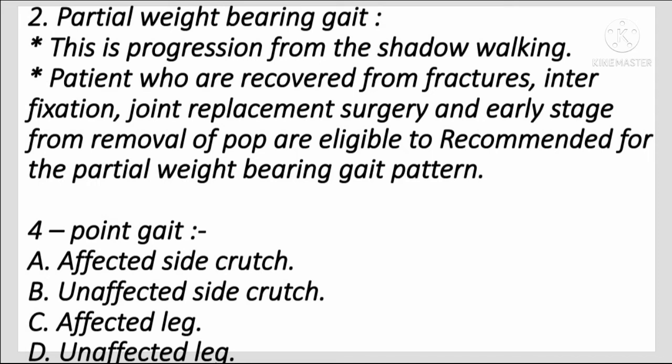Partial Weight-Bearing Gait is a progression from shadow walking. Patients recovered from fracture, interfixation, joint replacement surgery, or early stage after removal of POP are eligible for this pattern. 4-Point Gait for partial weight bearing is bad first: affected side crutch, then unaffected side crutch, then affected leg, then unaffected leg.